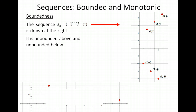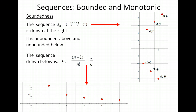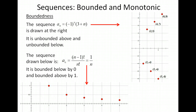For our third example, simplified to 1 over n, the values approach 0 but never go below 0. So it's bounded below by 0. And the highest value we had was 1, so it's bounded above by 1 and bounded below by 0.